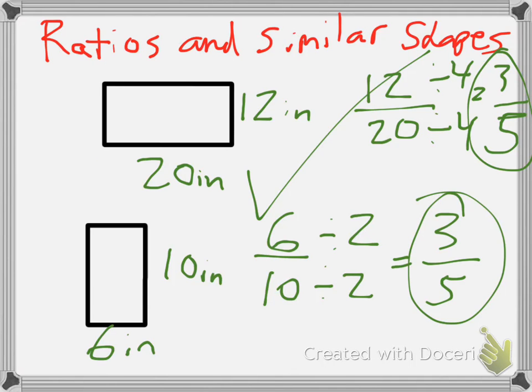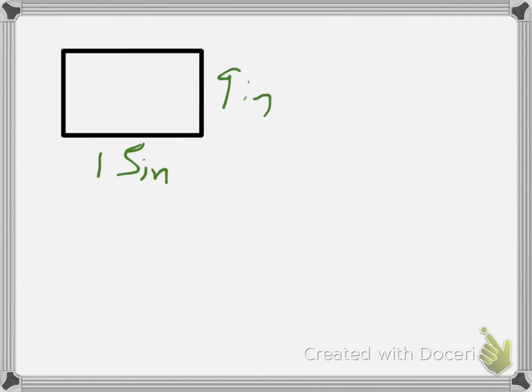I'm going to get into the habit of always putting the smaller number on top, but you can do the other way around as long as you're consistent in what you do. So in this case I have 9 over 15 and I'm going to simplify that. I can divide both of those numbers by 3 and that gives me a simplified ratio of 3/5.